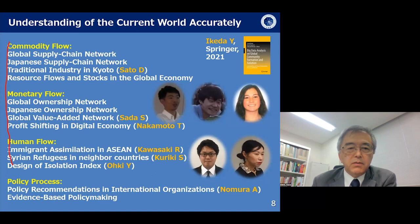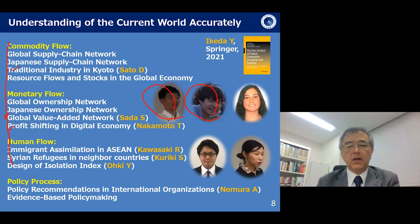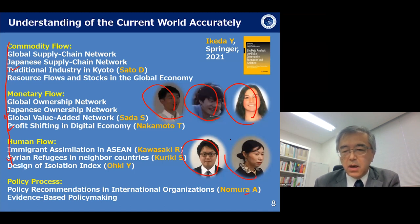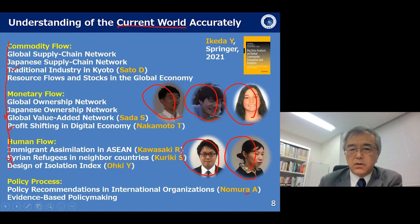For example: the traditional industry in Kyoto; the global value-added system by Sada-kun; profit shifting in the digital economy by Nakamoto-kun; immigrant assimilation in ASEAN and the world by Kasek-san; Syrian refugees in neighboring countries by Kasek-kun; and the design of an isolation index by Oki-kun. In the policy process, Nomura-san contributed significant writing to explain activity in international organizations. Their studies helped us understand the world today accurately.